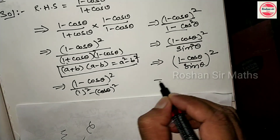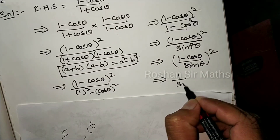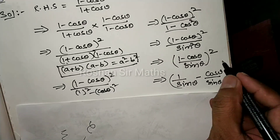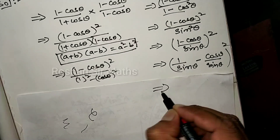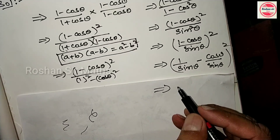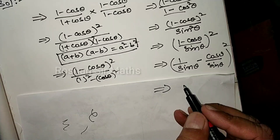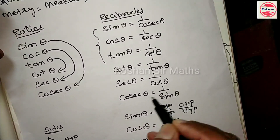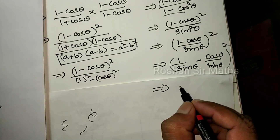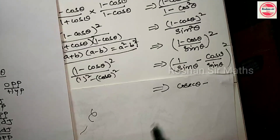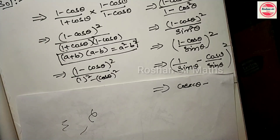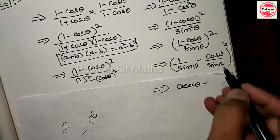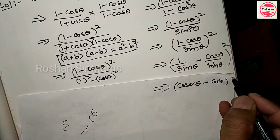अब इसको separate करेंगे: (1 by sin theta) minus (cos theta by sin theta), इन दोनों को हम लोग separate करेंगे। अब 1 by sin theta का reciprocal cosec theta होता है। और cos theta by sin theta की identity cot theta है। तो हम लोग इसकी जगह पर cosec theta minus cot theta लिख सकते हैं, ऊपर इसके whole square।